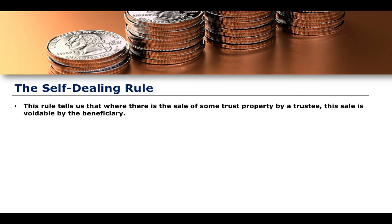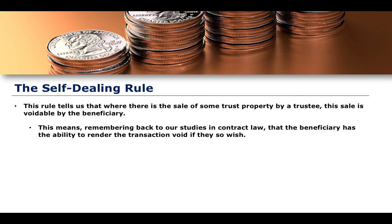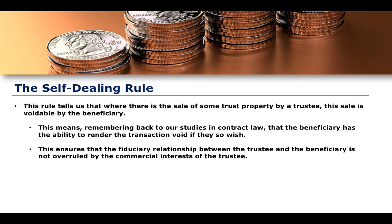What the self-dealing rule does in utilising voidability is suggest that where there is the sale of a trust property by a trustee, even if that sale is done for the purposes of benefiting a beneficiary, the sale can be made voidable by the beneficiary. The beneficiary can say this sale is rendered void — I don't want this sale to go ahead. This ensures that the fiduciary relationship between the trustee and the beneficiary cannot be overruled by the commercial interests of the trustee. That's fundamentally the self-dealing rule.